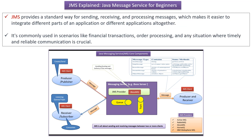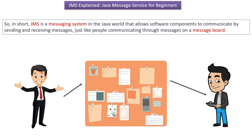JMS provides a standard way for sending, receiving, and processing messages, which makes it easier to integrate different parts of an application or different applications altogether. It is commonly used in scenarios like financial transactions, order processing, and any situation where timely and reliable communication is crucial. In short, JMS is a messaging system in the Java world that allows software components to communicate by sending and receiving messages, just like people communicating through messages on a message board.